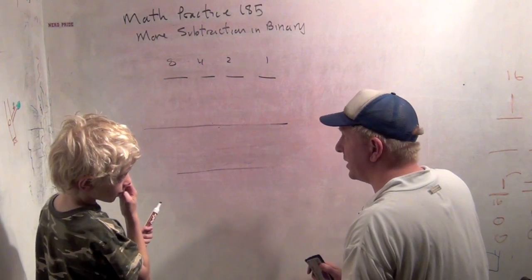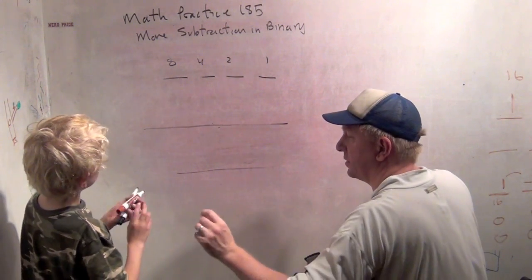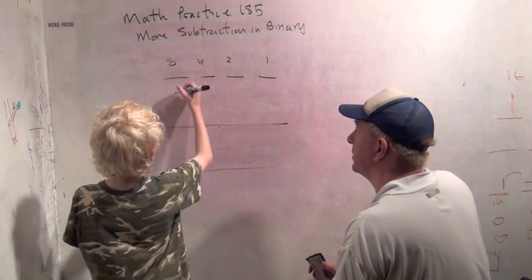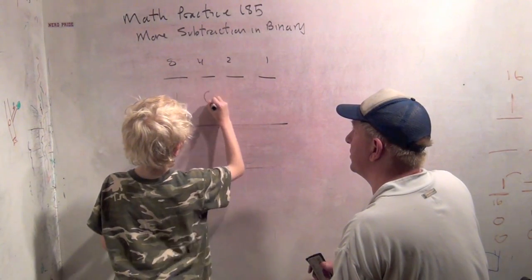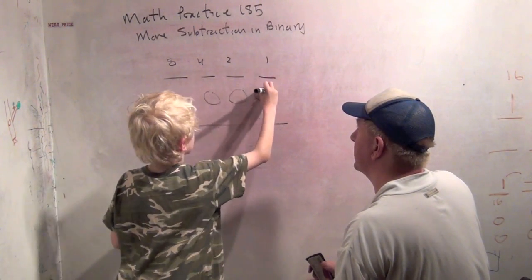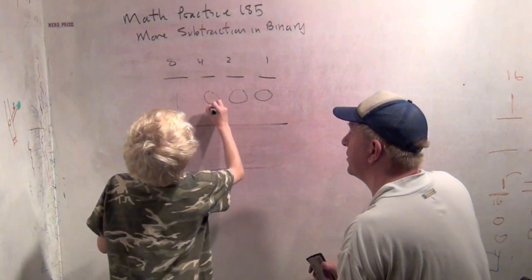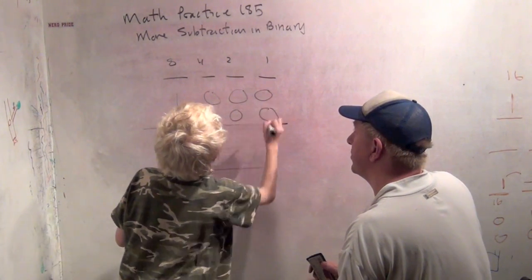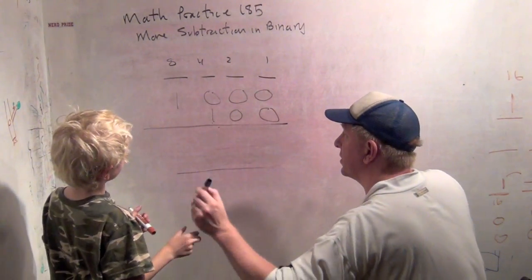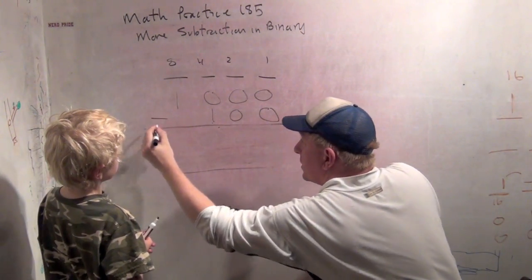So what's the number eight in binary? It's, I think, it's one, zero, zero, zero. Great. And what's the number four in binary? One, zero, zero. Perfect. Okay, so we're going to subtract these now.